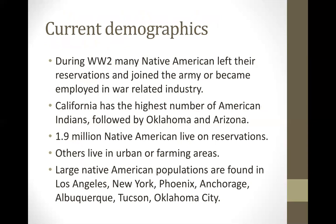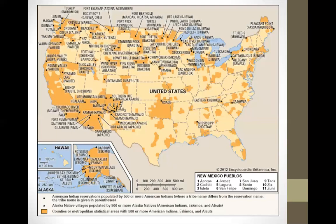During World War II, many Native Americans joined the army or had war-type employment. California had the highest number of American Indians, followed by Oklahoma and Arizona — this is specific to Native Americans, as Alaska Natives highly populate Alaska. A map of the United States shows areas in orange representing regions with over 500 American Indians, Eskimos, or Aleuts. California, Arizona, Alaska, and Oklahoma are among the most populated regions for Native Americans.